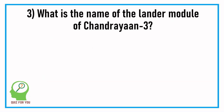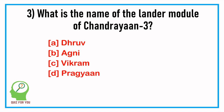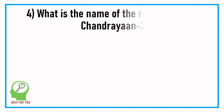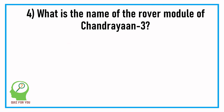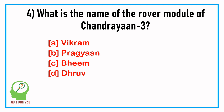Question number three: what is the name of the lander module of Chandrayaan-3? Answer: Vikram. Question number four: what is the name of the rover module of Chandrayaan-3? Answer: Pragyan.